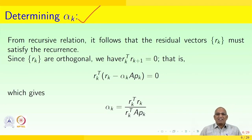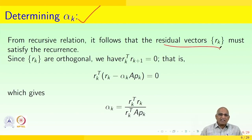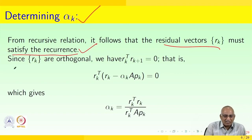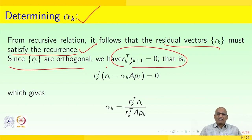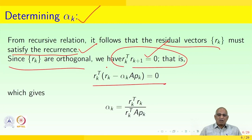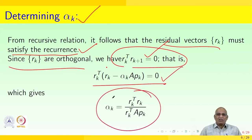From the recursive relation, the residual vector r_k must satisfy the recurrence relation. Since r_k are orthogonal, we have r_kᵀ r_{k+1} = 0. Then r_kᵀ(r_k − α_k A p_k) = 0, which gives α_k = r_kᵀ r_k / (r_kᵀ A p_k).